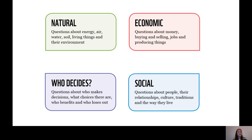The final part of the compass is Who Decides — this is about who makes decisions, what choices there are, who benefits, and who loses out. We're going to use these four points of the compass to think about questions and how all these things link together. I'll do an example with you first, using a picture, and we'll think about questions under Natural, Economic, Social, and Who Decides.